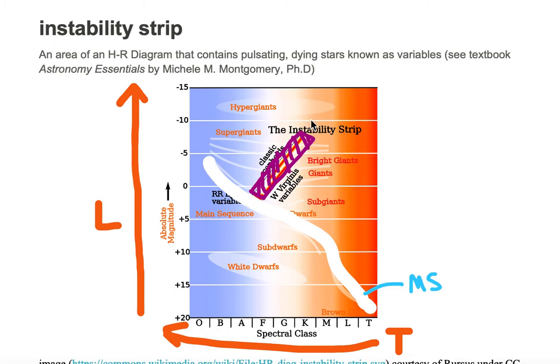They are dying stars that are pulsating - actually changing size repeatedly and regularly over time, cyclically varying their size. If they were on the main sequence, they wouldn't be varying their size.